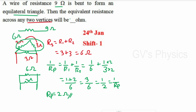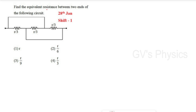Second question: Find the equivalent resistance between the two ends of the given circuit. First, we name the junctions. We assign potential A to one end. Across certain junctions, bare wires connect them, meaning they share the same potential — we label those junctions B.